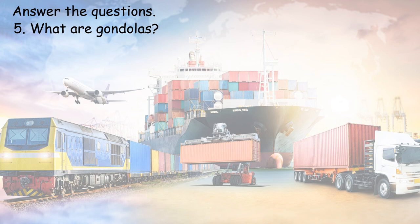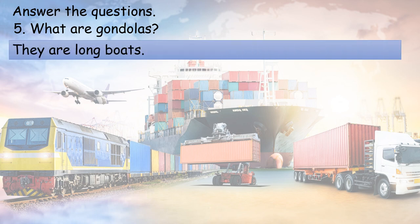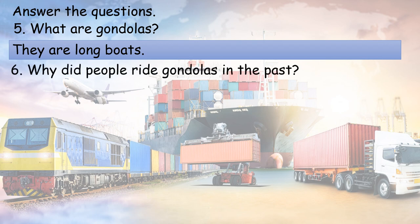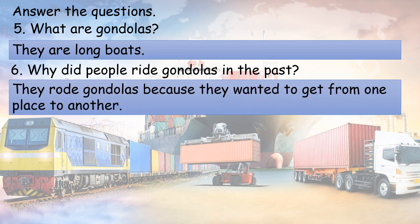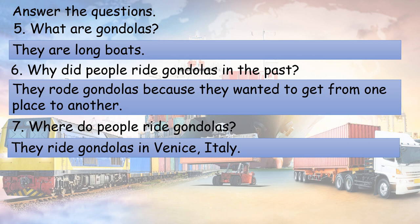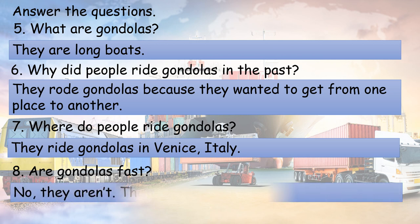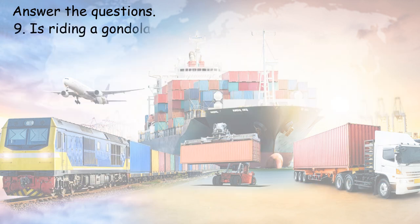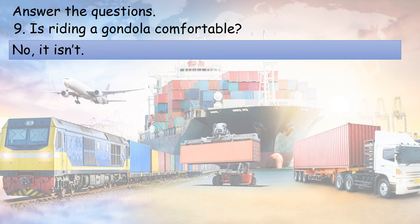5. What are gondolas? 6. Why do people ride gondolas? They rode gondolas because they wanted to get from one place to another. 7. Where do people ride gondolas? They ride gondolas in Venice, Italy. 8. Are gondolas fast? No, they aren't. They are slow. 9. Is riding a gondola comfortable? No, it isn't.